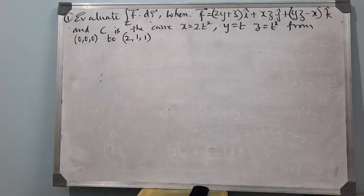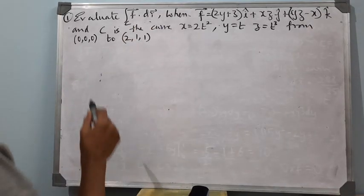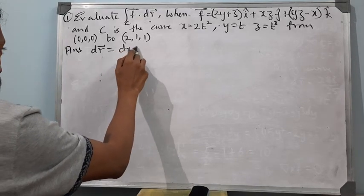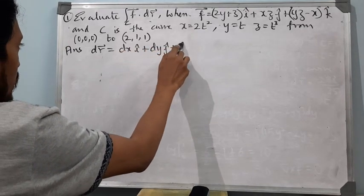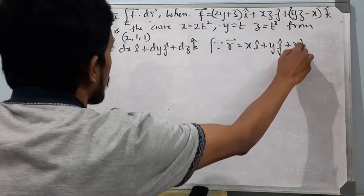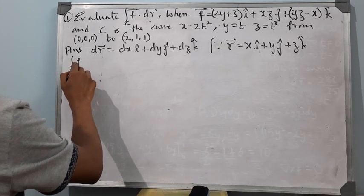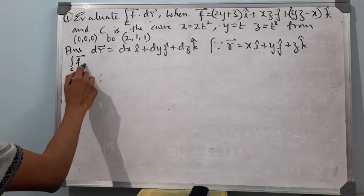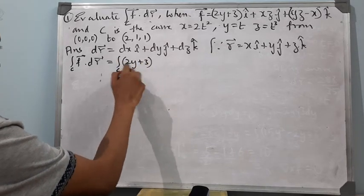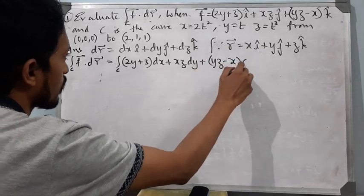Let us consider an example where we have to evaluate ∫f·dr. Now, dr is dx î + dy ĵ + dz k̂, because r is x î + y ĵ + z k̂. The integral ∫C f·dr is equal to ∫C (2y+3)dx + xz dy + (yz−x)dz.